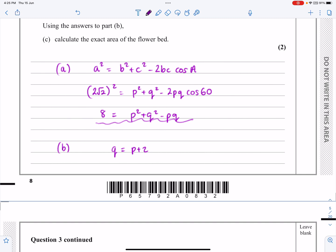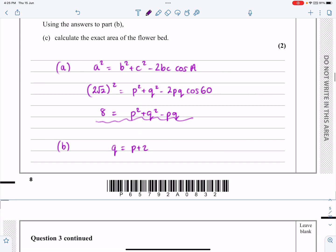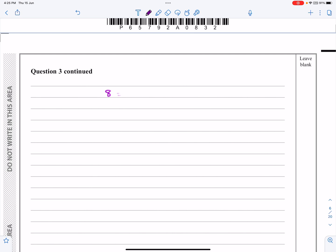I'm going to make that substitution in then. Q² is going to become (P + 2)² and that Q there is going to become P + 2. I'm going to get 8 = P² + Q² which is (P + 2)² minus PQ, P(P + 2). Let's tidy this up. I'm going to get 8 = P² + P² + 4P + 4, and then multiplying out the second bracket is -P² - 2P. Now let's get everything onto one side equal to zero. P² + P² - P² is P². 4P - 2P is +2P. We've got 4 but the -8 is coming over, so -4 equals zero.